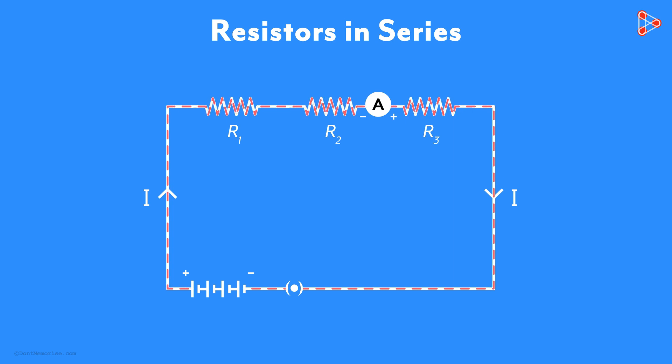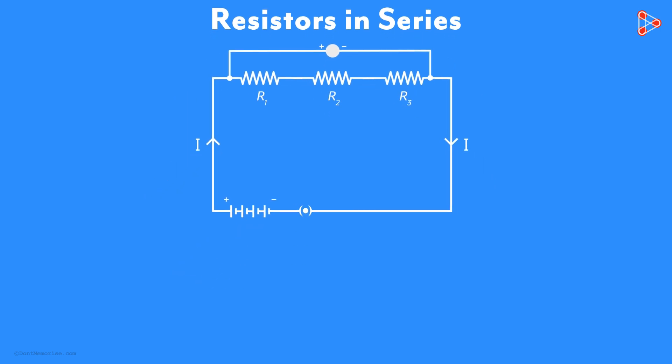Okay, now let's remove the ammeters which are between the resistors and try out something else. Now insert a voltmeter across the start of the first resistor and the end of the third resistor. Now plug the key and note the potential difference across the resistors. Let's say it's V volts.